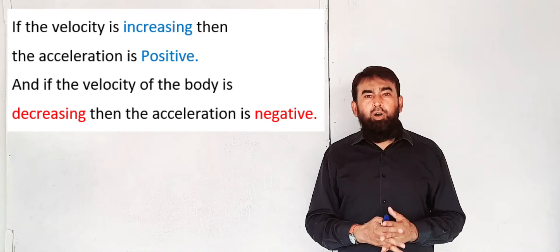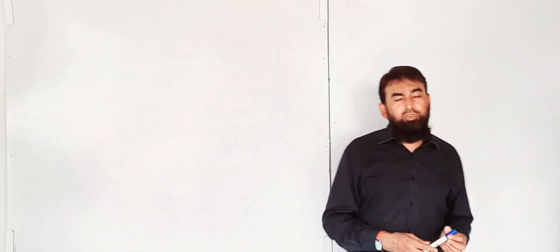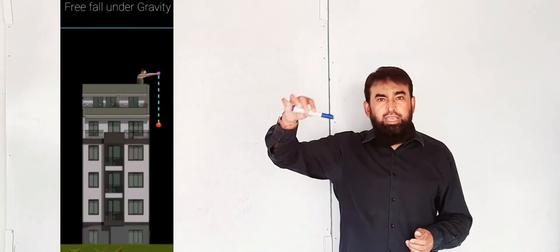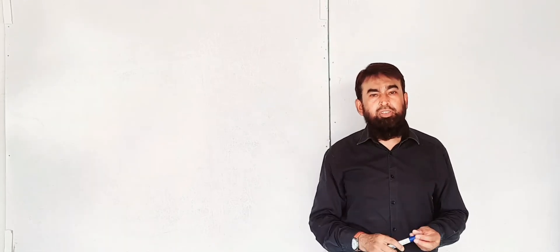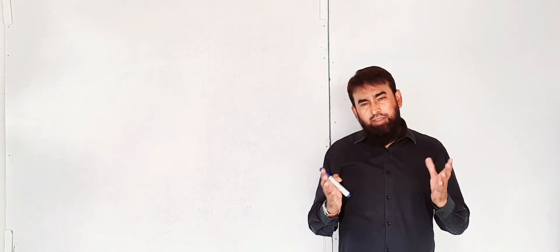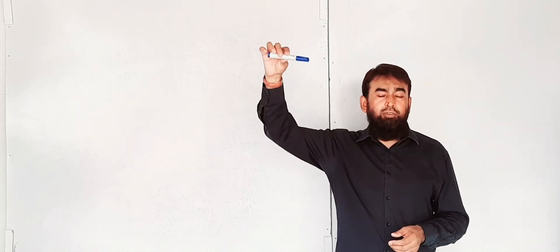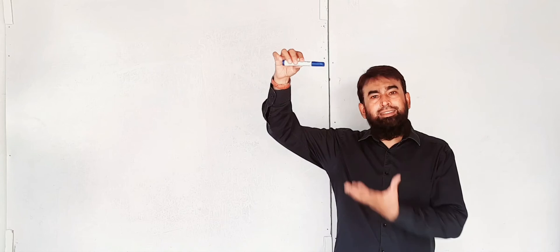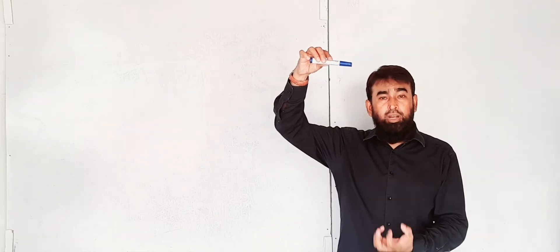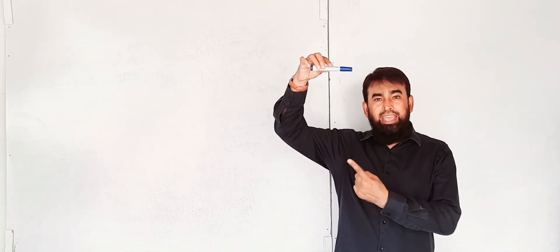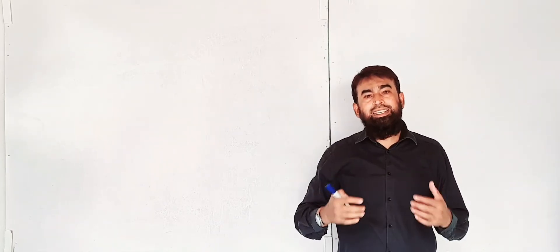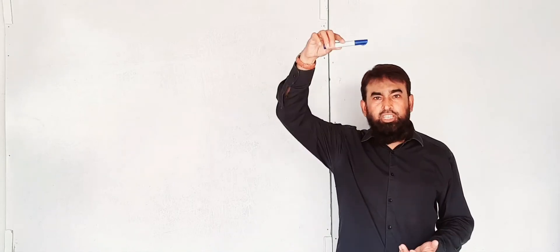Now, coming to the point about bodies which are falling freely — freely falling bodies. If I am talking about freely falling bodies, remember that a body which is being dropped near the surface of the earth, and only the earth's gravitational pull is applying a force — meaning the earth is applying a force of attraction on this body — and under the action of this force of attraction, the body comes downward with certain acceleration.